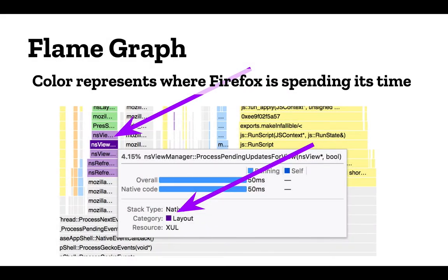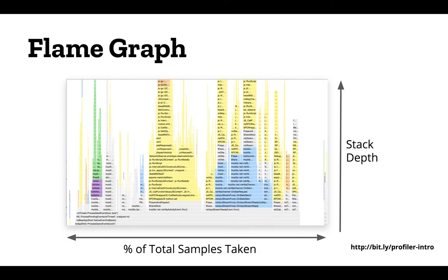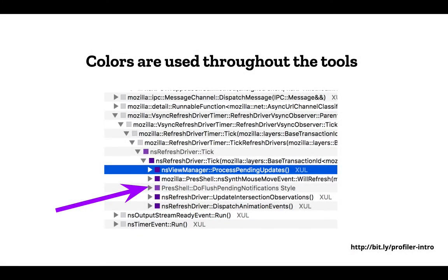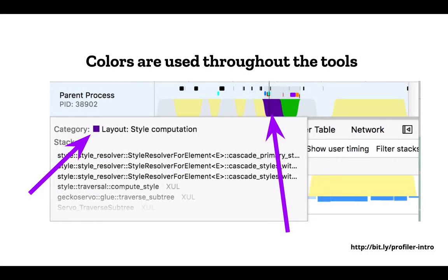The useful tip of hovering over everything applies here too. If you hover over the flame graph it shows you the current information for that call node. The purple color — you can find its meaning by looking at the tooltip — is the category 'layout'. These colors are used throughout the tools consistently, so as you navigate the entire UI you'll find that consistent usage. If you're ever confused about a color, hover and the tooltip should show you what that color means.